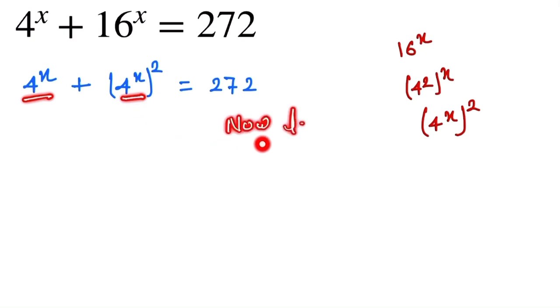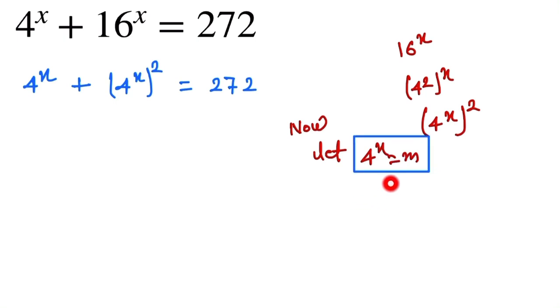Now for 4^x, let 4^x = m. So here, m + m^2 = 272.